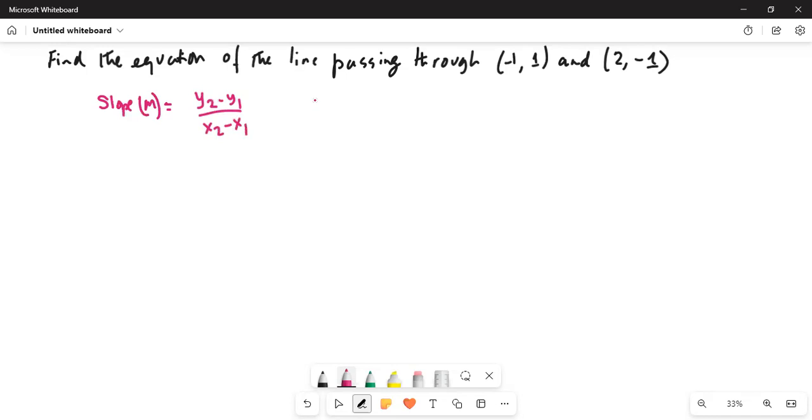Now from the given points, (-1, 1) which are x1, y1, and (2, -1) which is x2 and y2.